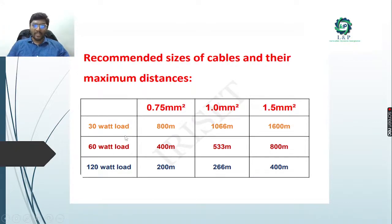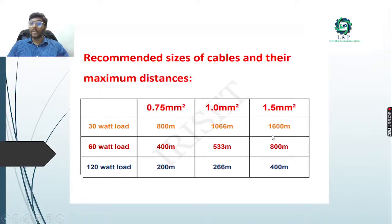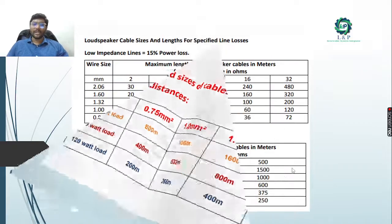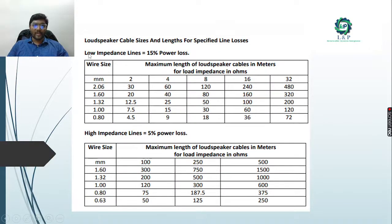Recommended cable sizes: for a 30-watt load, 0.5 mm² cable can be used up to 800 meters, 1 mm² up to 1066 meters, and 1.5 mm² up to 1600 meters. For 60 watts: 400 meters, 533 meters, and 800 meters respectively. For 120 watts: 200 meters, 266 meters, and 400 meters. If you know the wire size, maximum length, and load impedance, you can calculate power losses. This shows how to determine maximum wire length for a particular wire size.